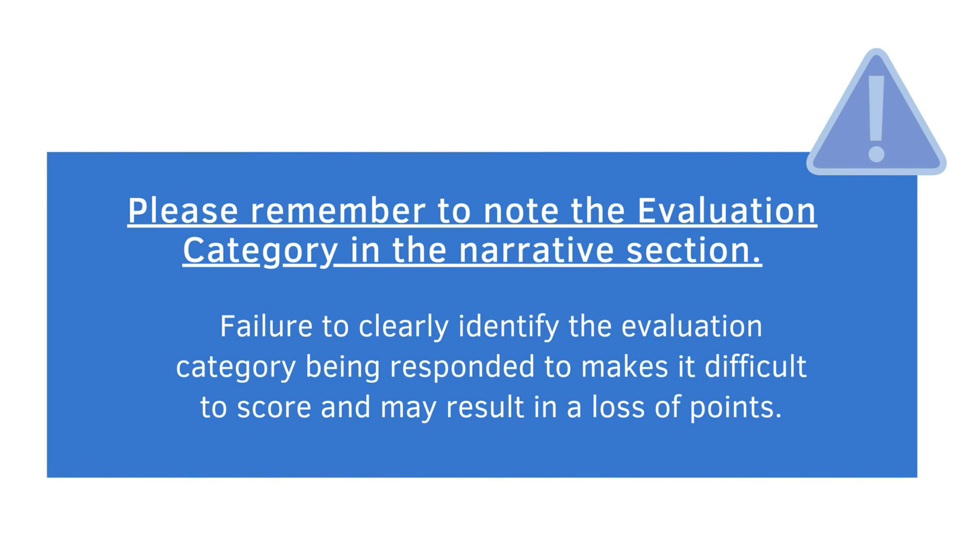For this section, reference the program documents and each community element to determine how to respond. The type is set at 12 point Times New Roman font and responses are limited to 4 pages. Please remember to indicate the evaluation category you are responding to and then write the narrative. In the next 4 pages, organizations will respond to the evaluation category for the community element they are submitting their program, activity, or event under. Applicants can also submit up to 3 pages of additional information in support of their narrative.